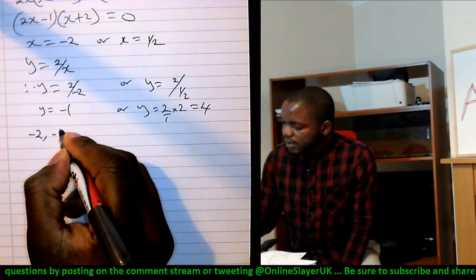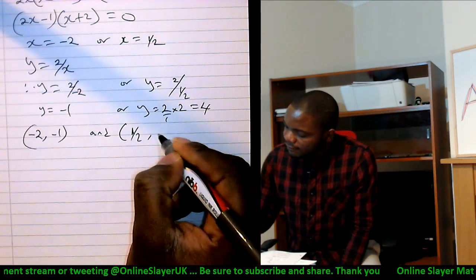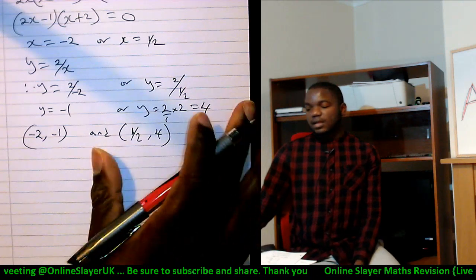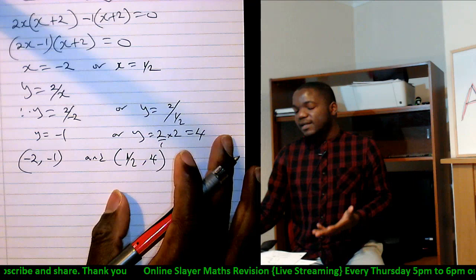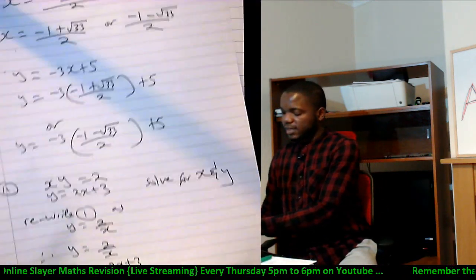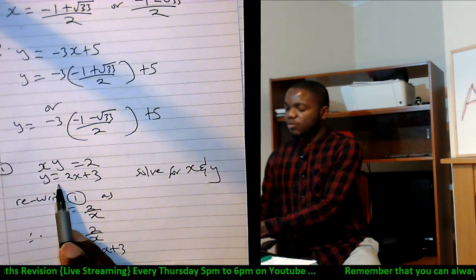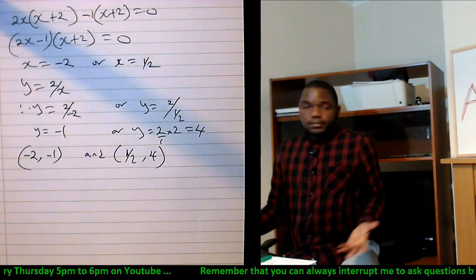2 over half is 2 over 1 times 2, just 4. So the solutions are minus 2 comma minus 1 and half comma 4. That is the solution. And it's the same thing as asking you to find the point where the line y equals to 2 over x meets the line y equals to x plus 3.